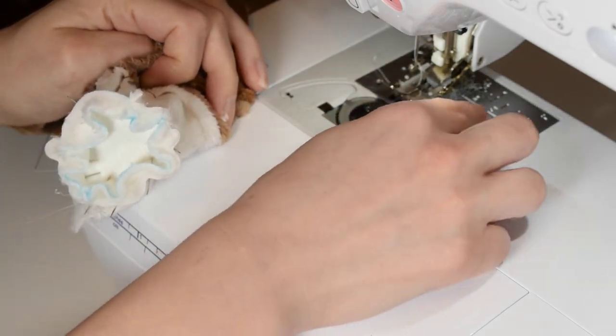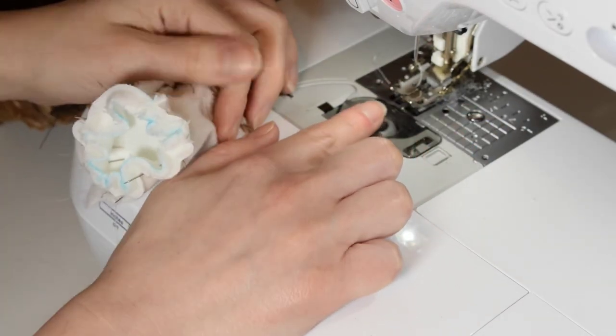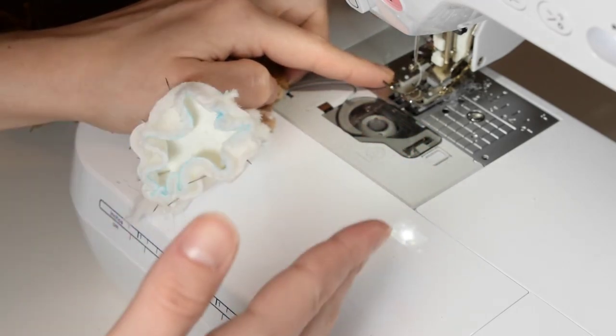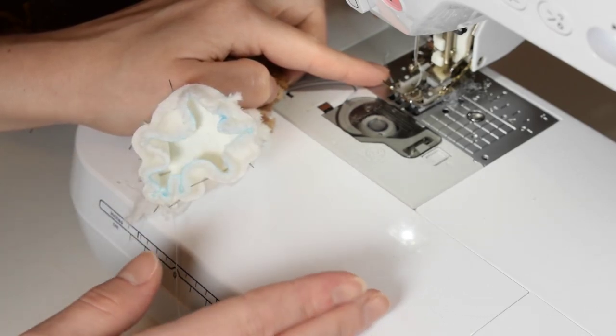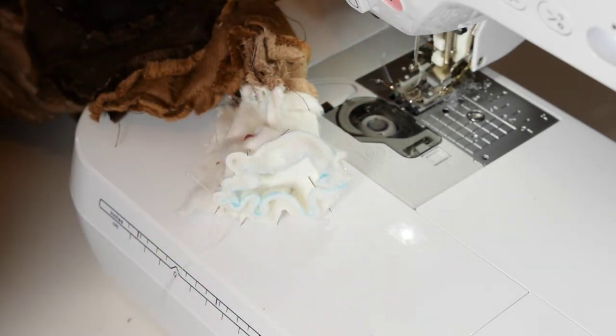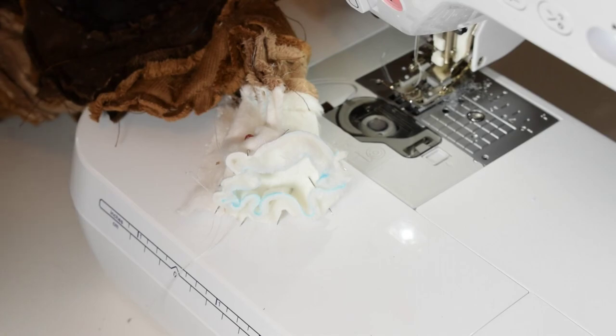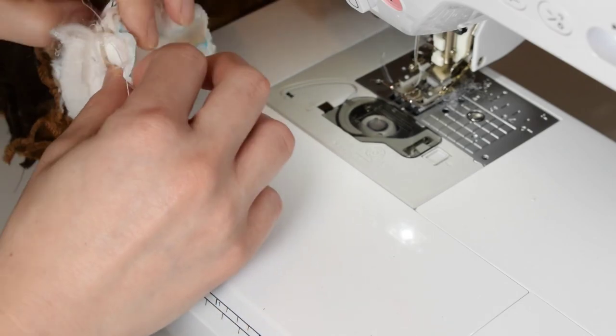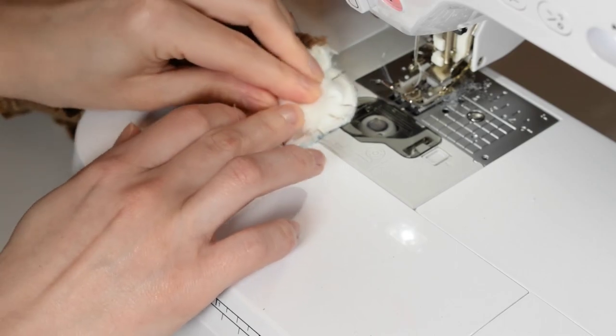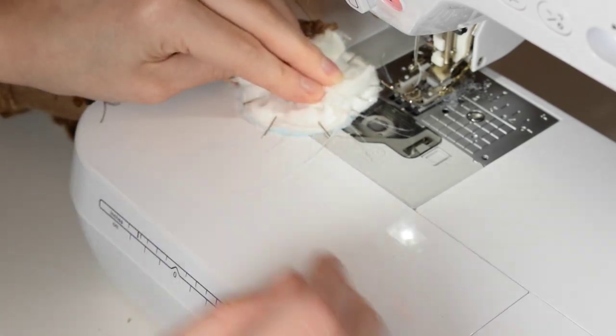So I have a walking foot installed. This is a different type of foot that has a set of feed dogs on the top that also helps move the minky along. If you sew with minky a lot, you might want to consider getting one. It makes it a lot easier because it doesn't get stuck as often as it would if you use a normal foot. But I got by for a very long time with just a normal foot. So don't feel like you need to buy one, but it'll definitely make your life easier. So I'm just going to go ahead and put this under my foot, trying to get the seam that I didn't trim out of the way.